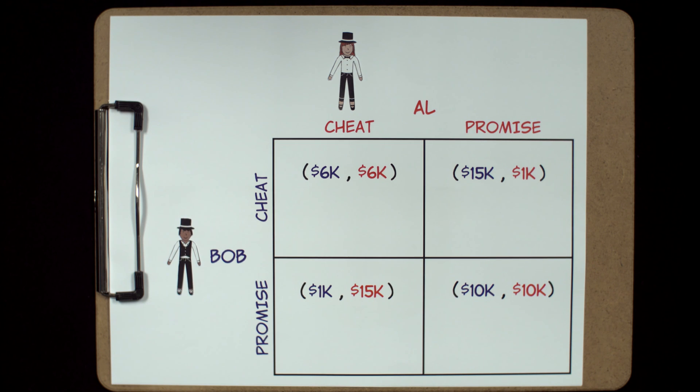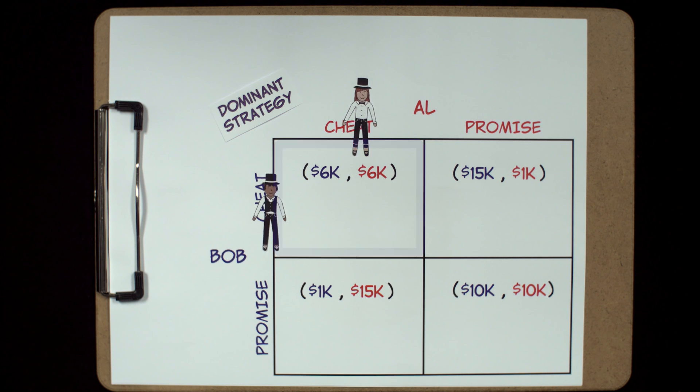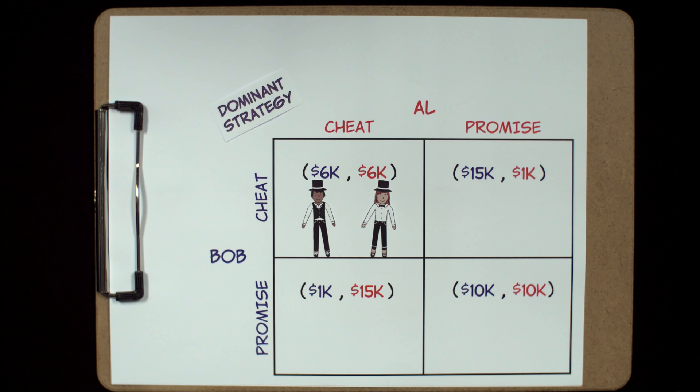Given that Al's best strategy is to perform five times per week, regardless of what Bob does, this is also considered her dominant strategy. So if Bob's dominant strategy is to cheat as well, then the Nash equilibrium in this game is for both of them to break their promises. They'll each perform five shows and earn $6,000.